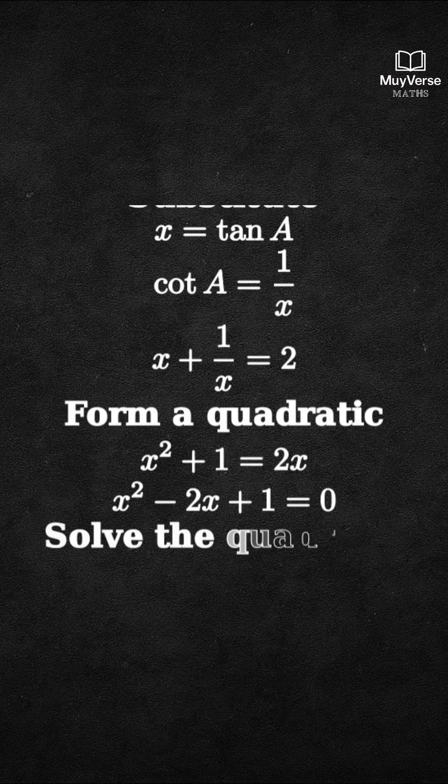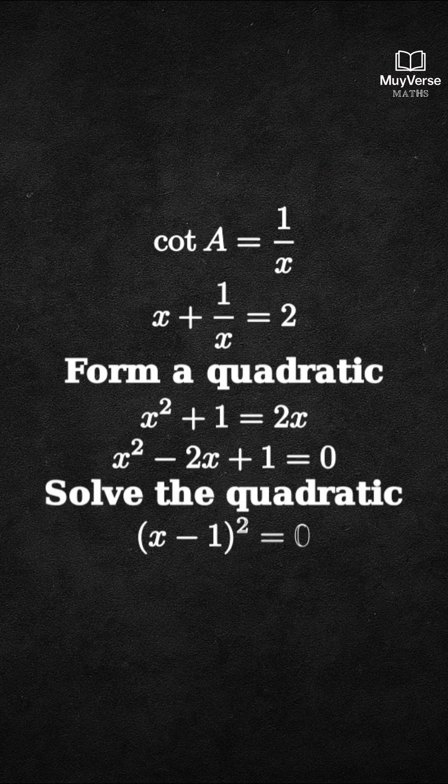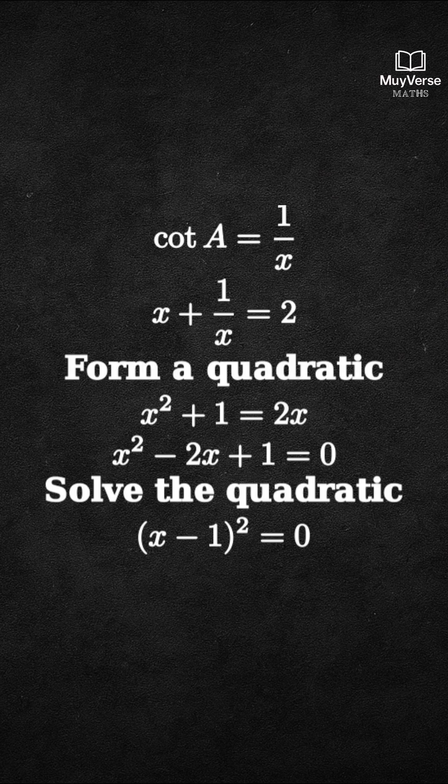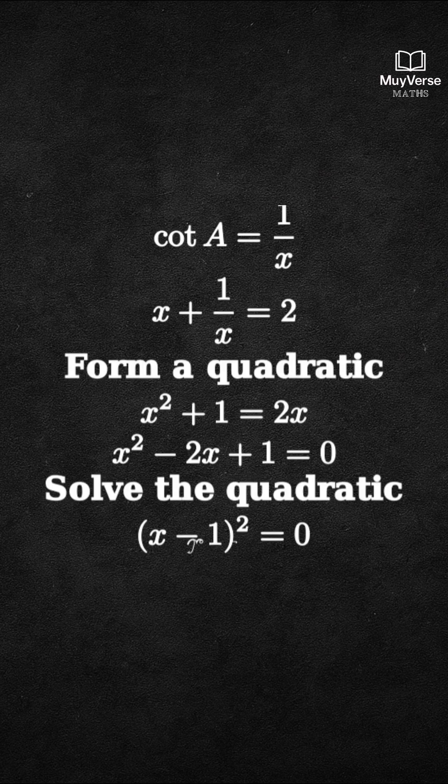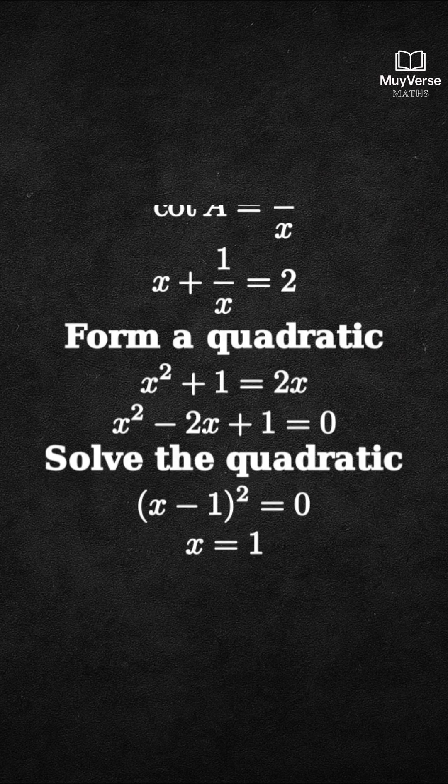Step 3: recognize the perfect square. The left side equals (x - 1)² = 0, so x = 1.